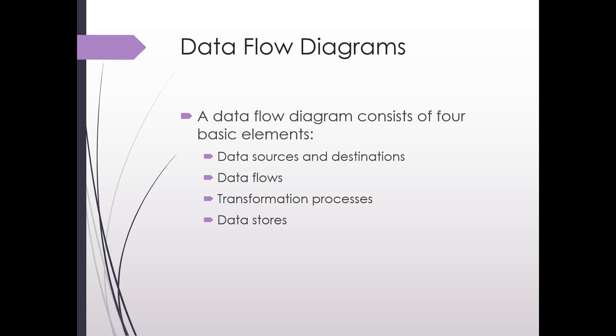So there are four basic elements that make up a data flow diagram: data sources and destinations, data flows, the transformation processes, and finally the data stores. So let's go through each one of these in more detail.